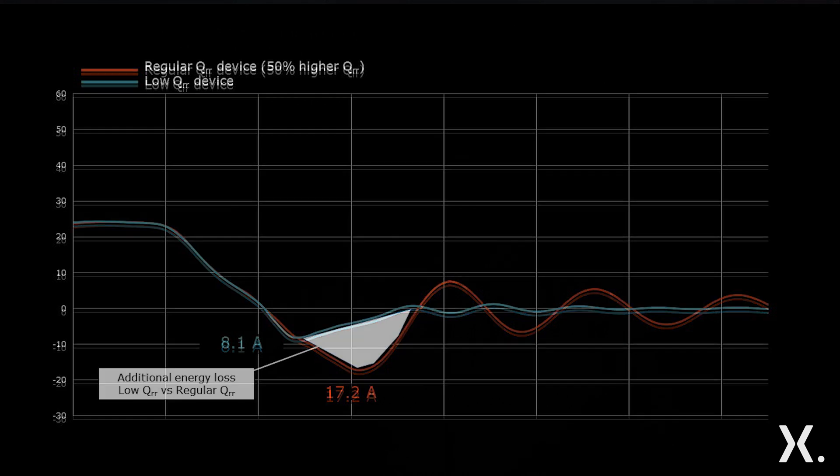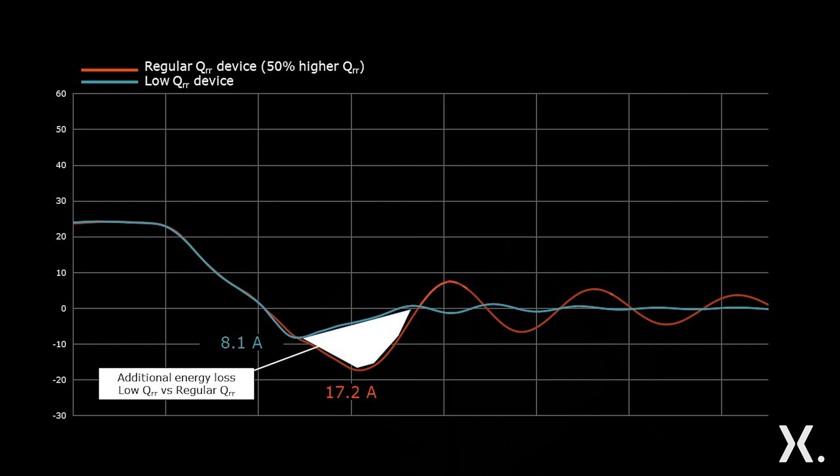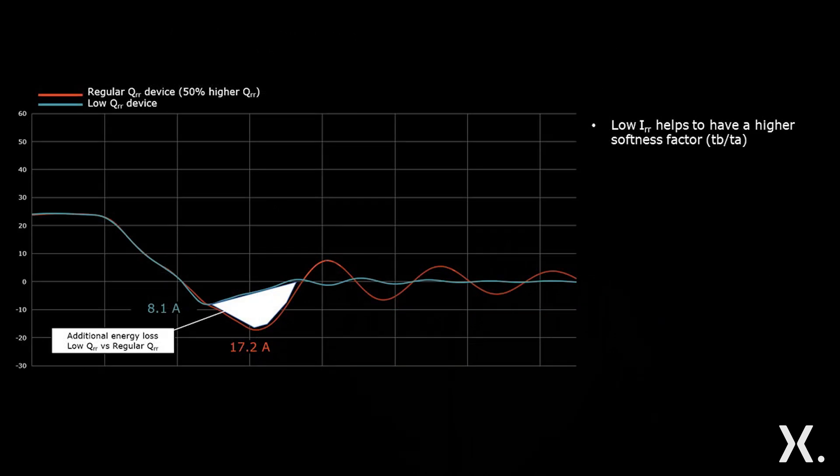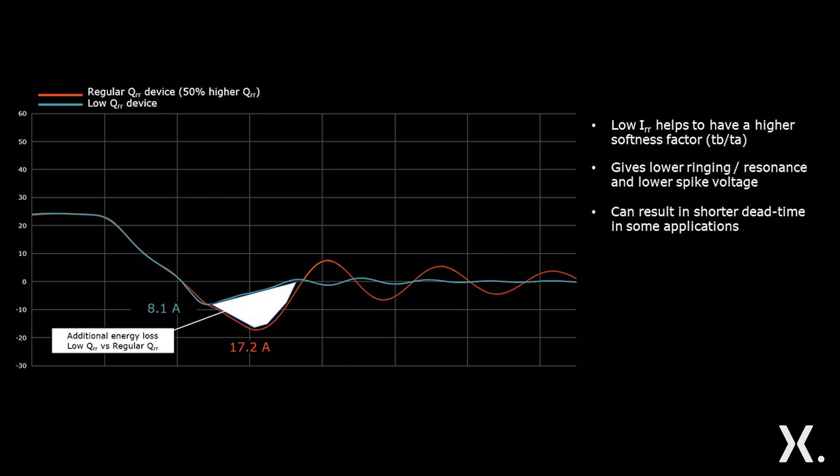In addition, energy loss is shown by the shaded area. Low IRR also helps having a higher softness factor and gives lower ringing and resonance. This can help in your application by having shorter dead times and improving efficiency further. One of the key factors of low IRR is that the lower ringing and resonance contributes to lower EMI emissions.